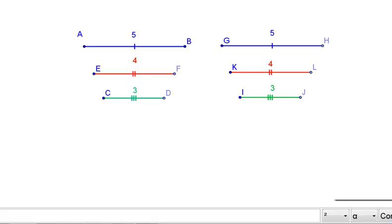But let's take a look at what we have here. And hopefully what you see is that I have three side lengths, 5, 4, 3 in length, and three other side lengths, 5, 4, 3 in length.